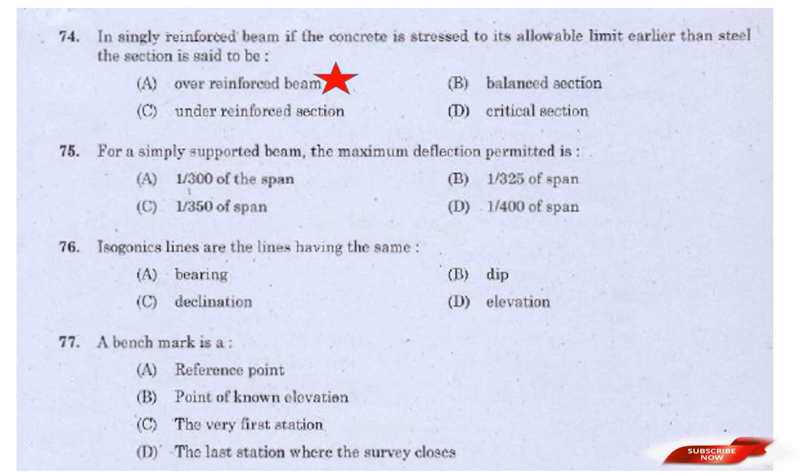Question: For a simply supported beam, the maximum deflection permitted is — options: 1/300 of span, 1/325 of span, 1/350 of span, 1/400 of span. Answer: Option B — 1/325 of span. The maximum deflection permitted for a simply supported beam is 1/325 of the span.